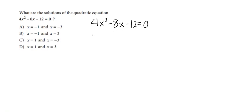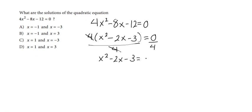So if we factor out a four we'll be left with x² - 2x - 3, and if we divide both sides by four we can eliminate this four on the outside and we'll be left with x² - 2x - 3 = 0.